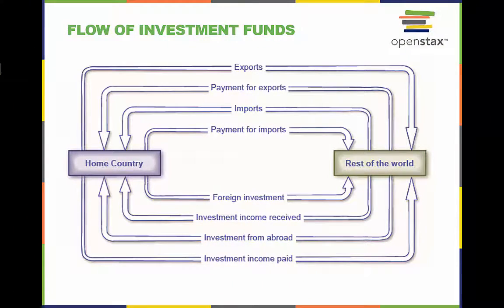In this figure, each element of the current balance involves a flow of financial payments between countries. The top line shows exports of goods and services leaving the home country. The second line shows the money received by the home country for its exports. The third line shows imports received by the home country, and the fourth line shows the payments sent abroad in exchange for these imports.